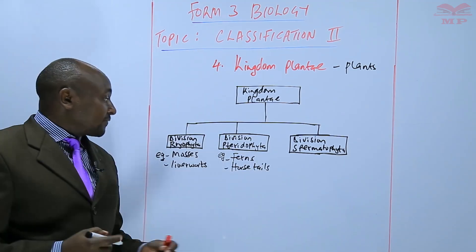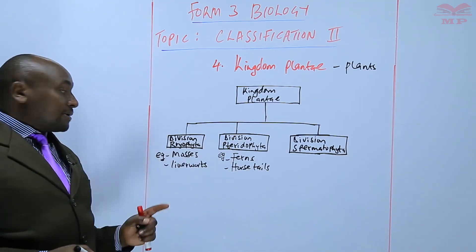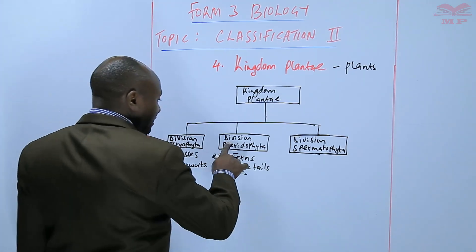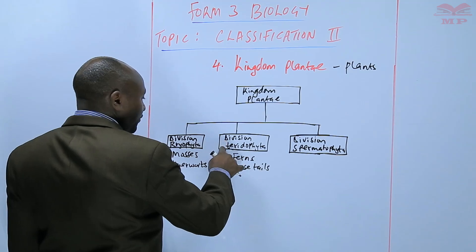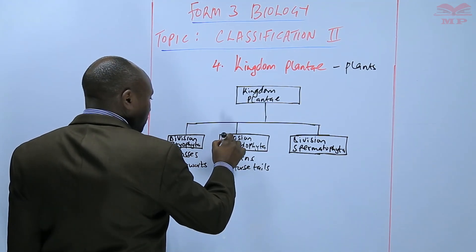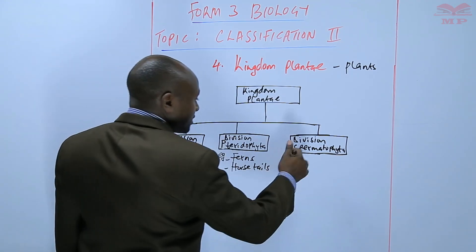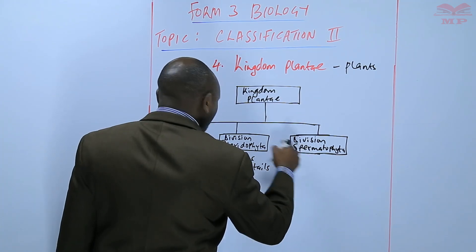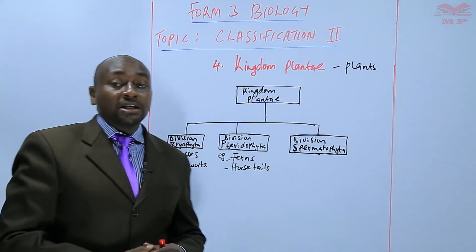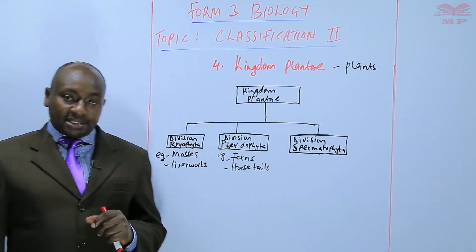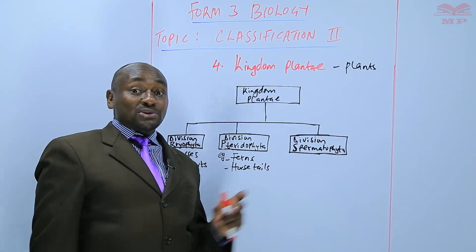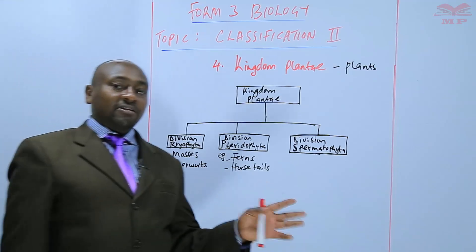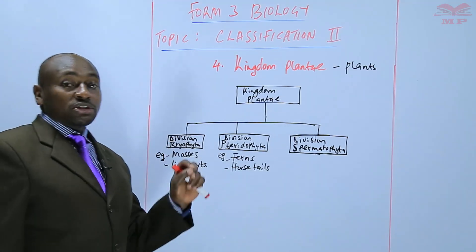Those are the examples in Division Pteridophyta. Note that the spellings are very important. Also, the first letter of the division should be capitalized: Pteridophyta, Spermatophyta, Bryophyta. This is a requirement when writing taxonomic units. Any of the taxonomic units — known as taxons — whether at kingdom level, phylum or division level, class, order, or family, the name should start with a capital letter.